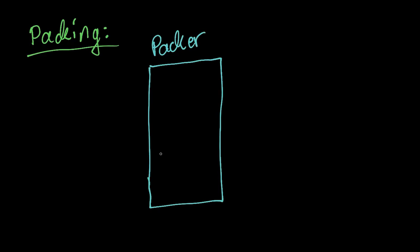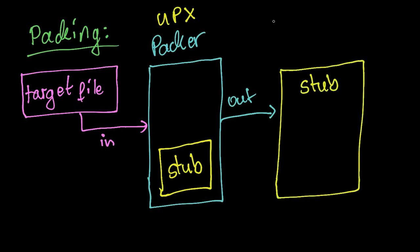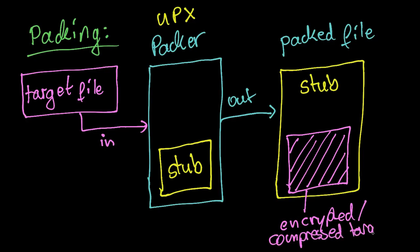But how does packing actually work? Firstly, we have a program called the Packer, that is for instance UPX. The Packer takes a file as input as well as a stub. Some Packers take the stub as separate input, but the stub might also be part of the Packer or generated by the Packer. This is just one example of several possibilities. The output of the Packer is the packed file. The process of producing a packed file is called packing. The packed file is the stub with the target file inside which is now compressed or encrypted.